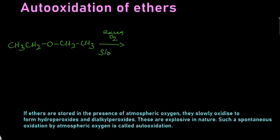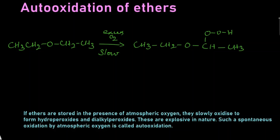This is a slow process. We get a mixture of 1-ethoxyethyl hydroperoxide — that is CH3, CH2, with oxygen attached at the CH carbon, and two oxygens attached giving CH3 — and the other compound where one more oxygen gets attached along with the ether oxygen, giving CH3, CH2, O, O, CH2, CH3.